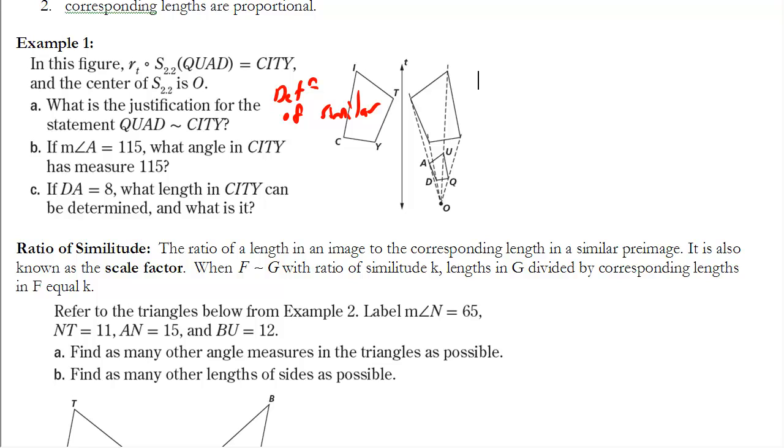Part B says that the measure of angle A is 115. What other angle in city would also have to have the same measure? Well, A corresponds with Y. Notice how they're in the same place here. And since I did that reflection, that would have to be true as well. Therefore, they would have to have the same measure. So this one would have to be 115 as well.